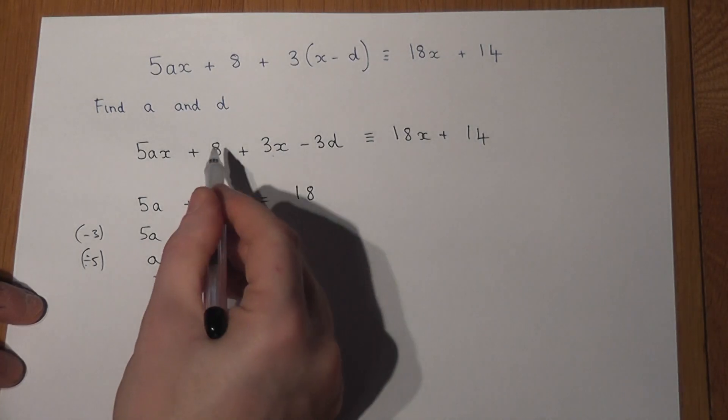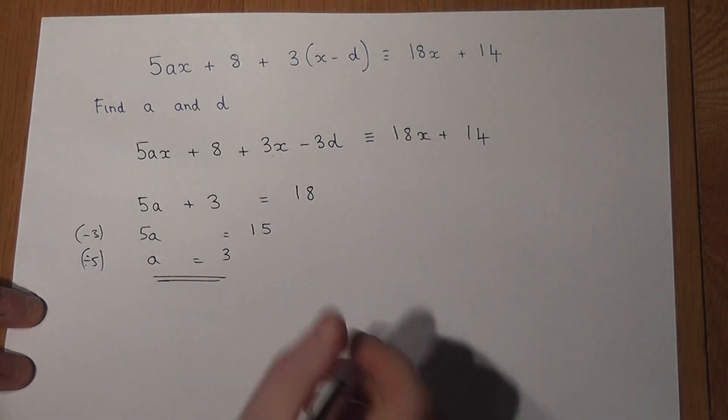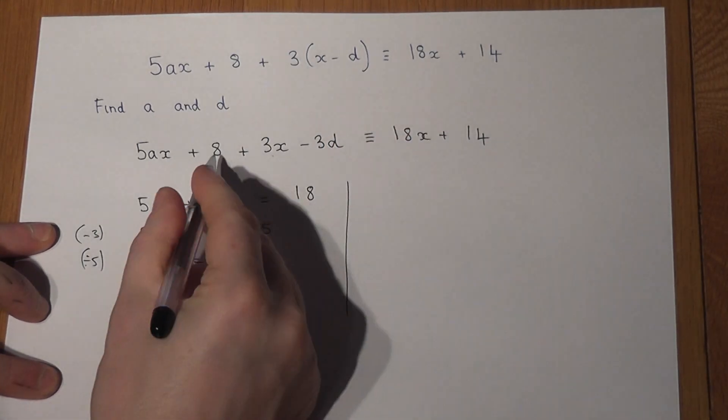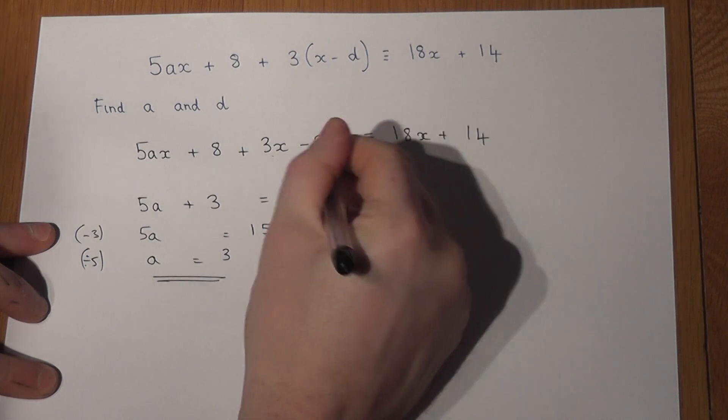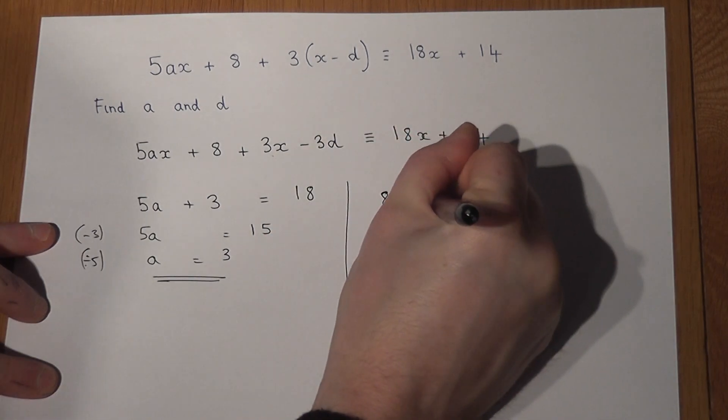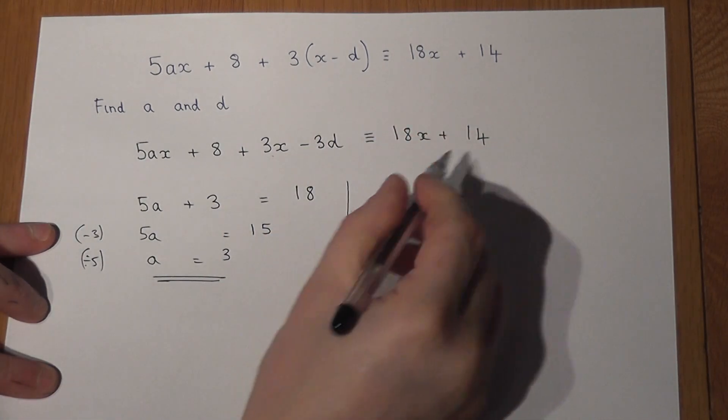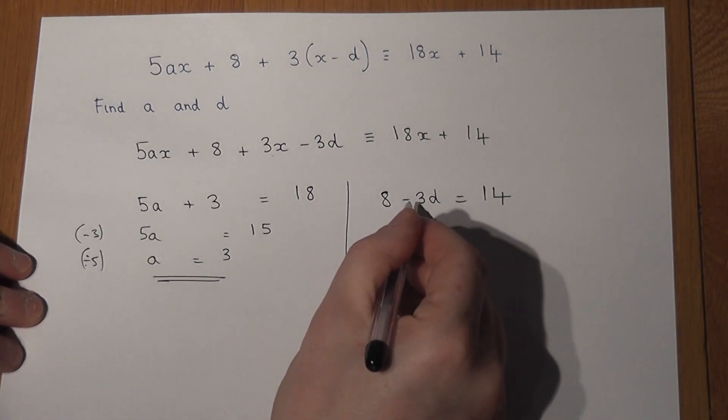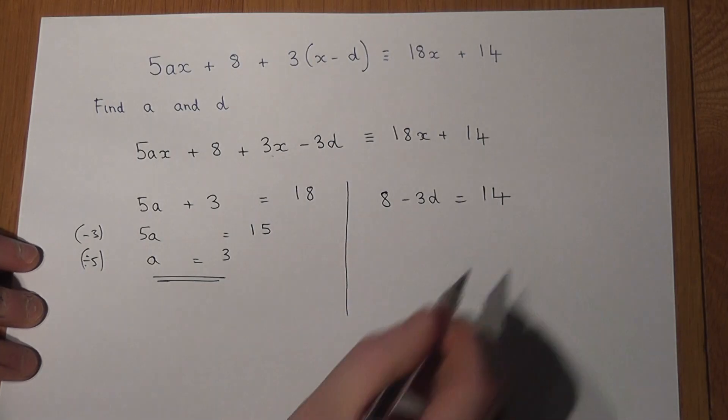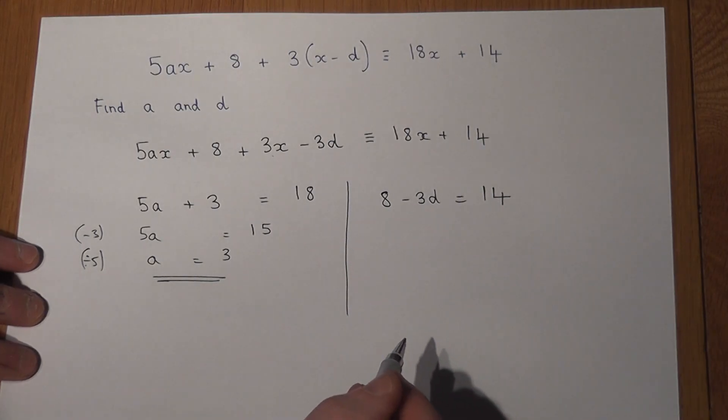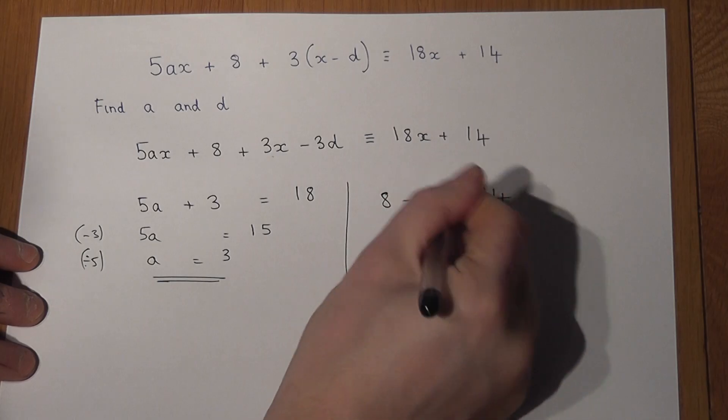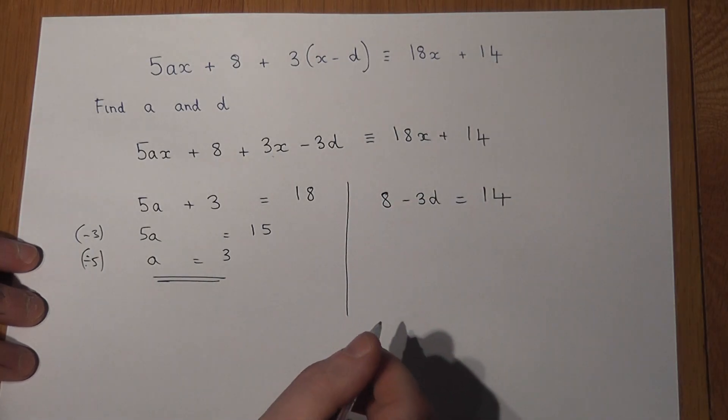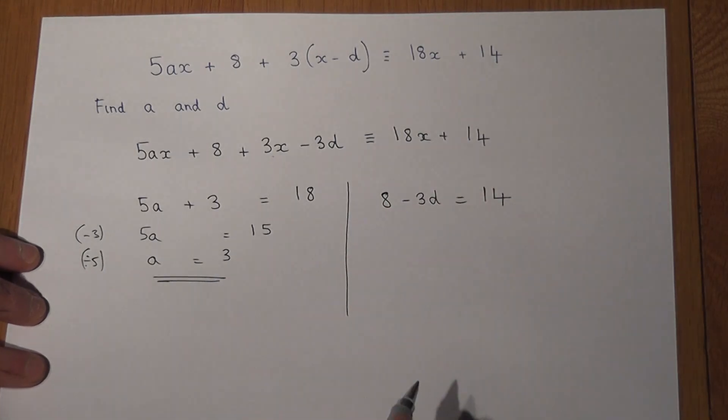Now for d, I look at just the number terms. There's an 8 and a minus 3d, and this has got to equal the 14. So 8 take away 3d must equal 14. So this minus 3d must be plus 6, because 8 plus 6 is 14.